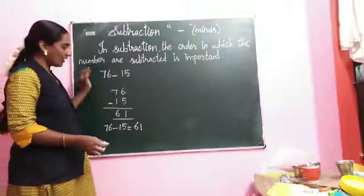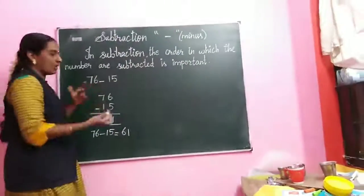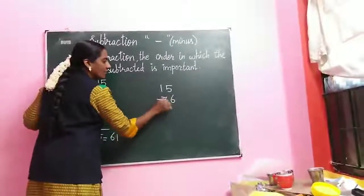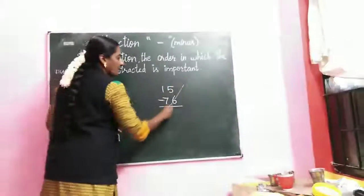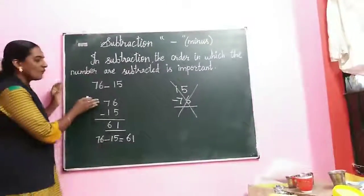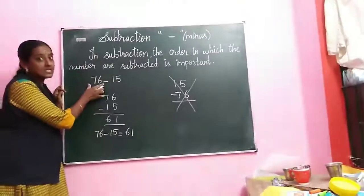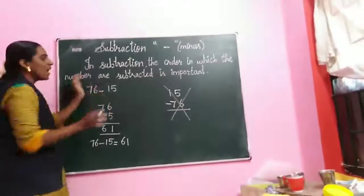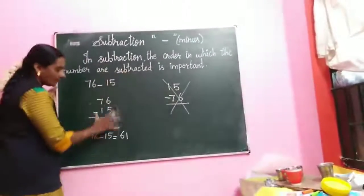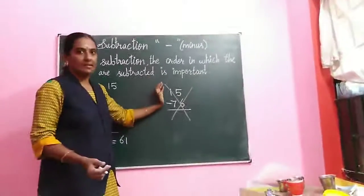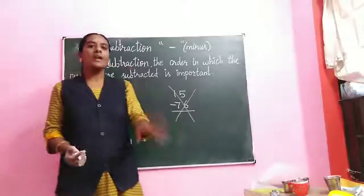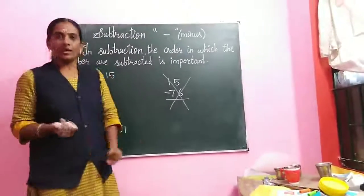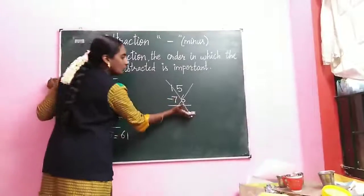This is the normal order. Now, can we change the order? If we write 15 first and then 76, we cannot do the sum. Because in subtraction we must always take the biggest number on the left side first, then subtract the right side number. If you only have 2 chocolates, how can you give 5? You can't. So we cannot change the order in subtraction — this is an important rule.